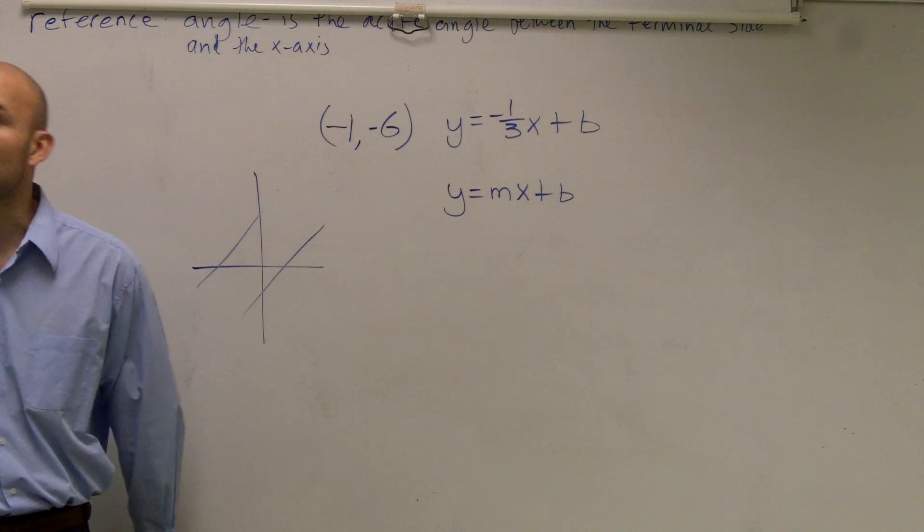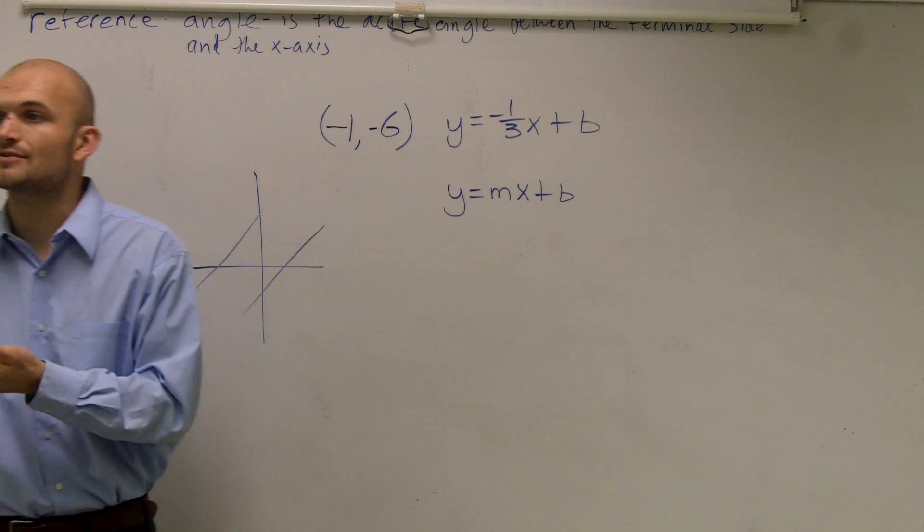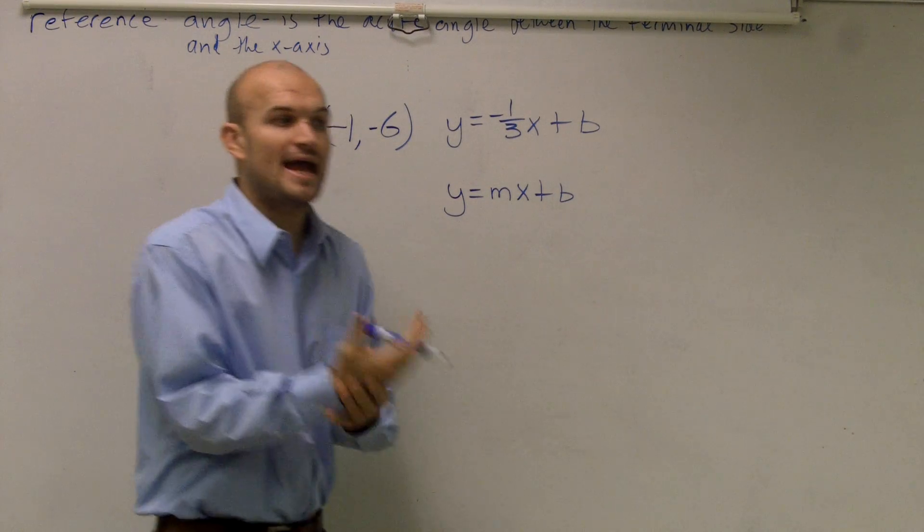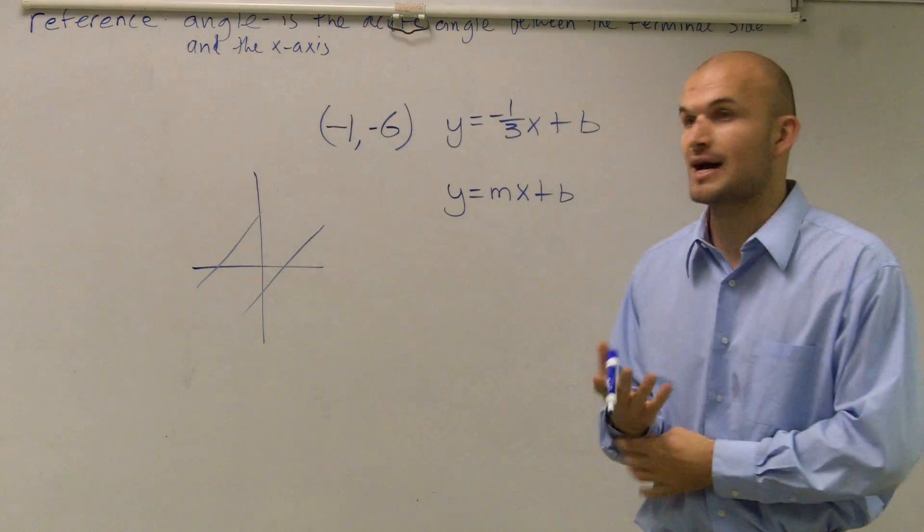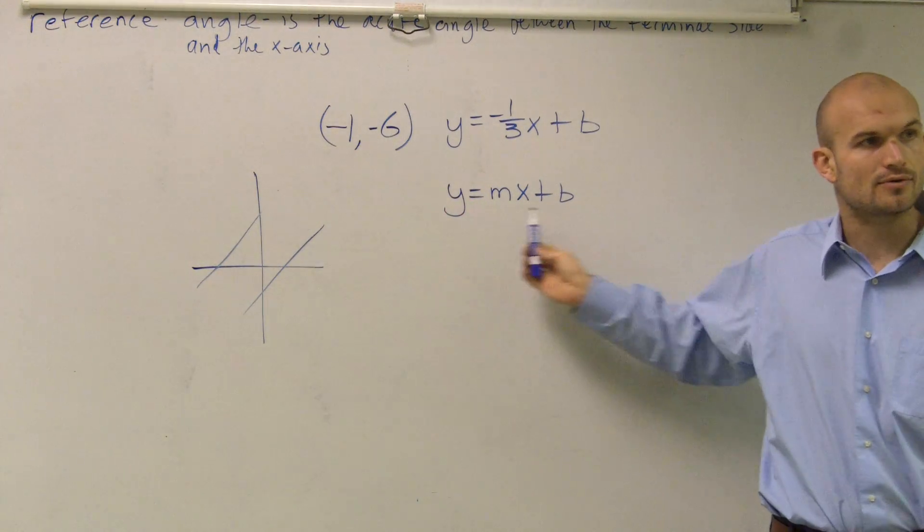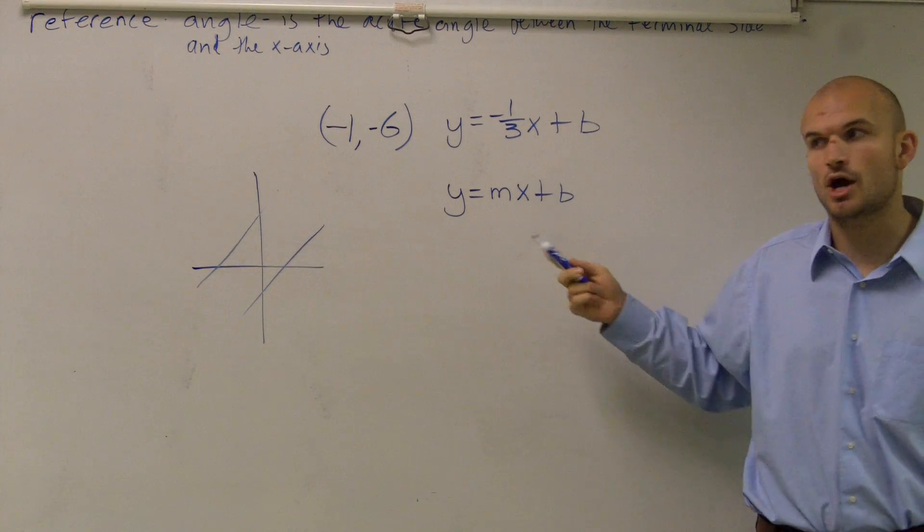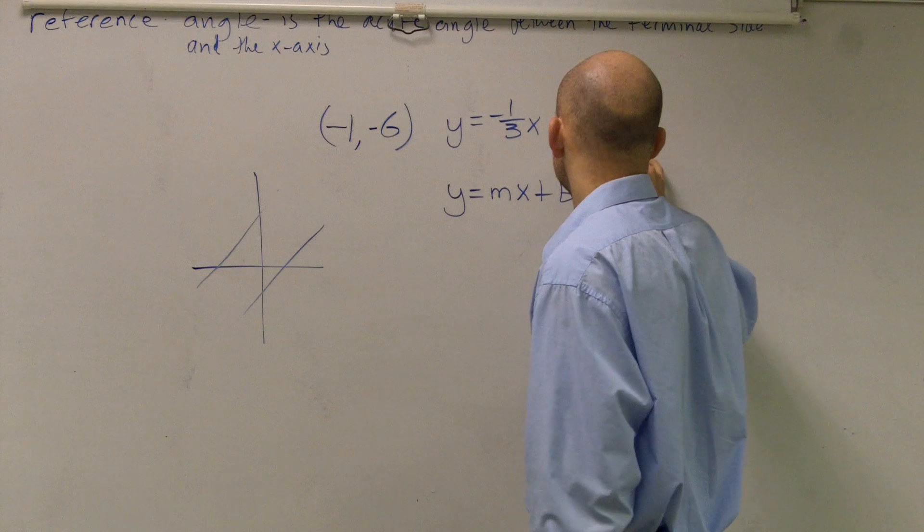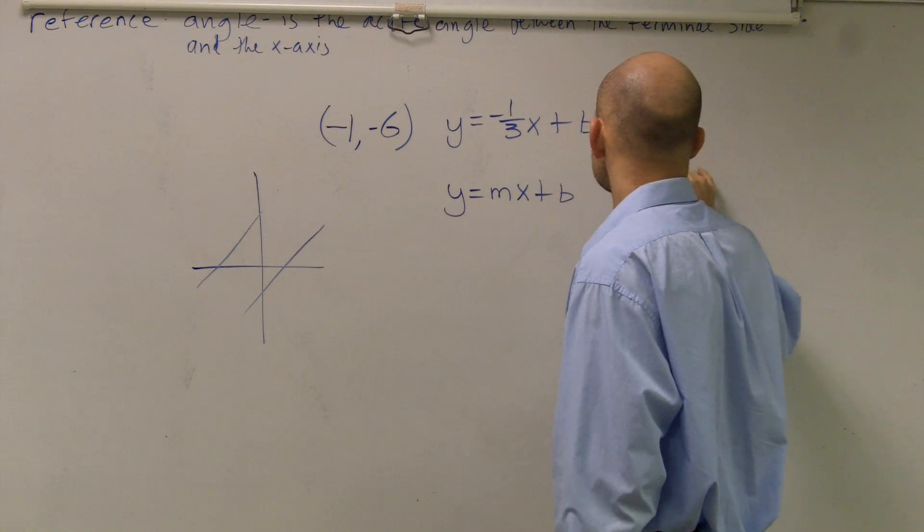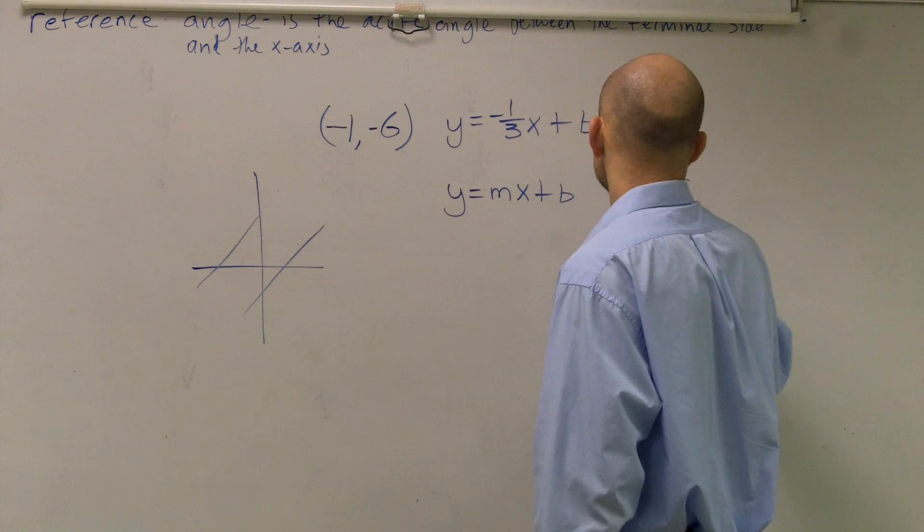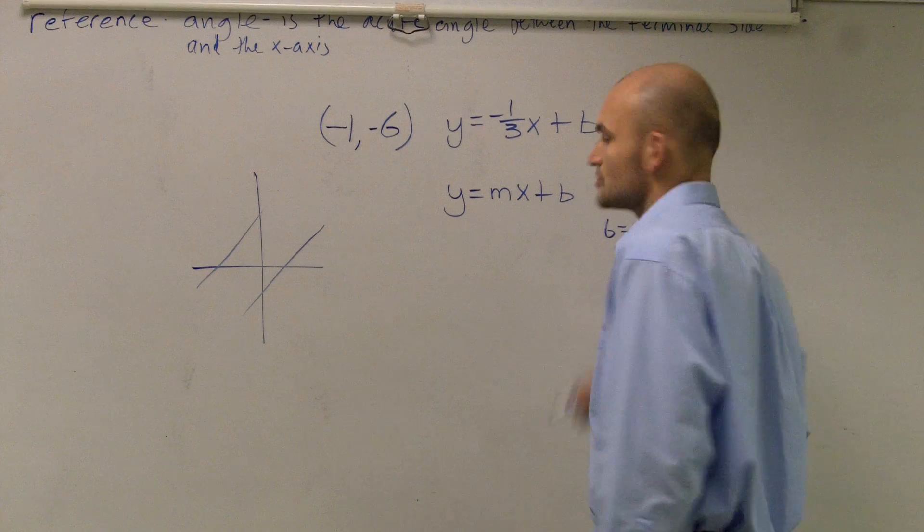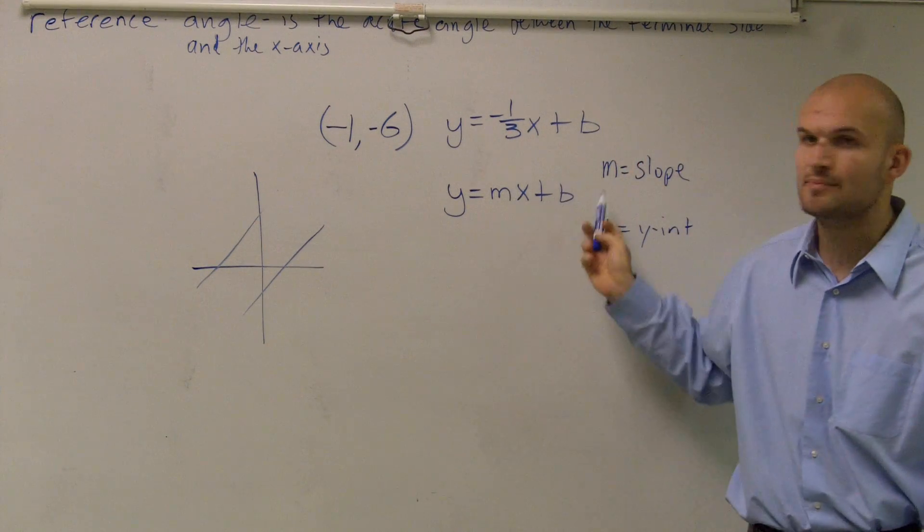This is what we call the slope-intercept form of a line. Any time I ask you to write what is the equation of a line, you're going to want to write down this slope-intercept form. And why this will help you out is because then you will know that M is your slope and B is your Y-intercept.